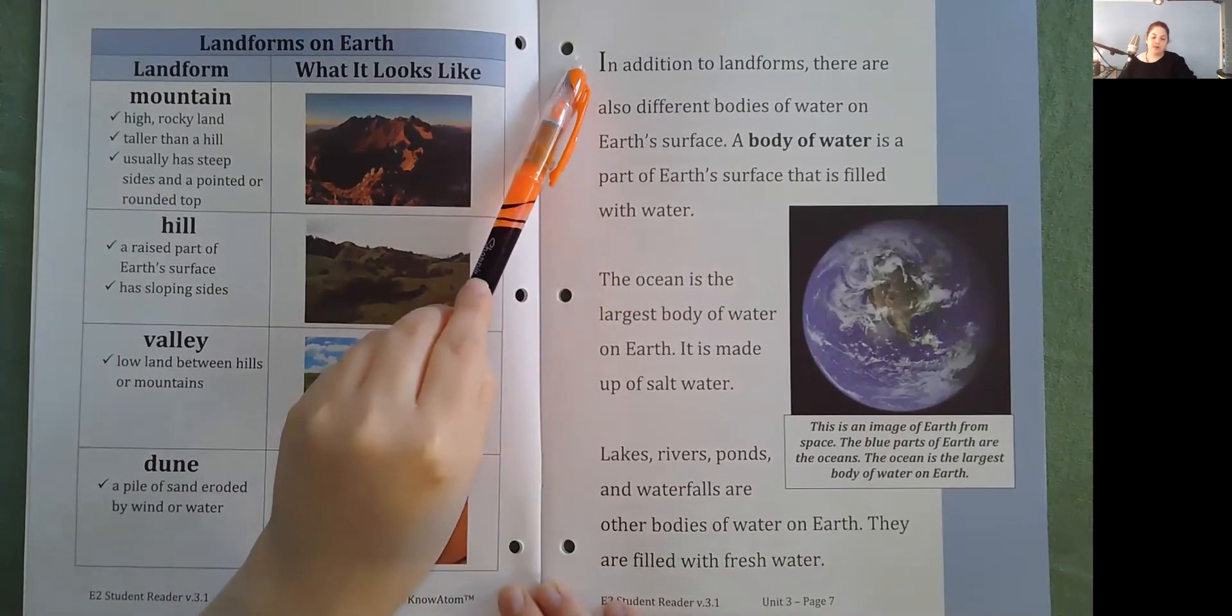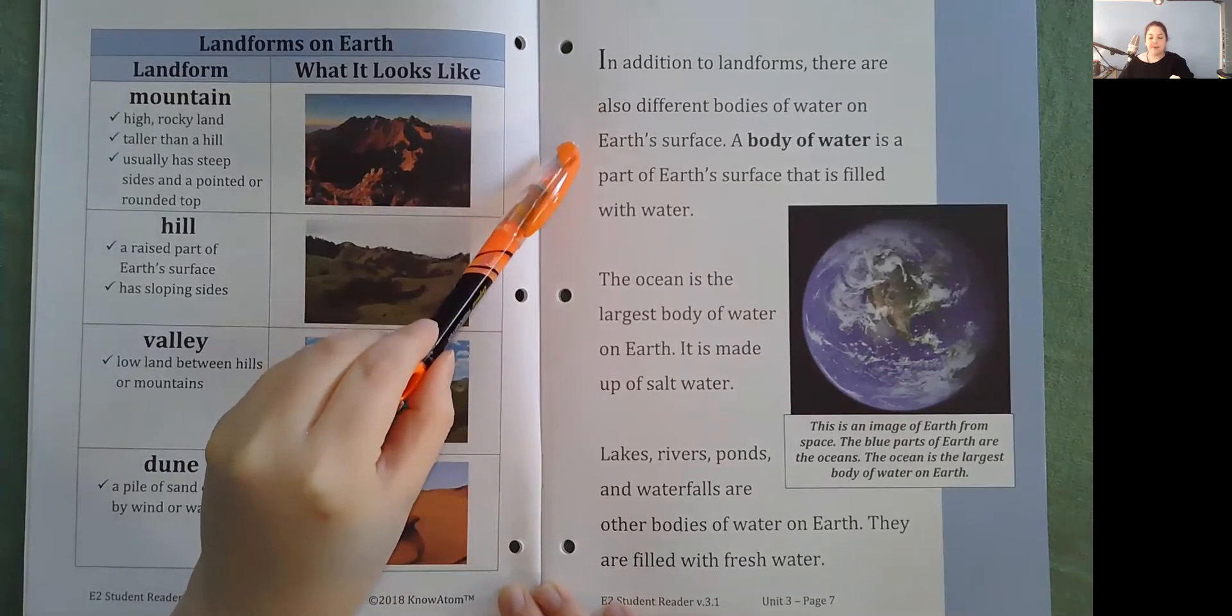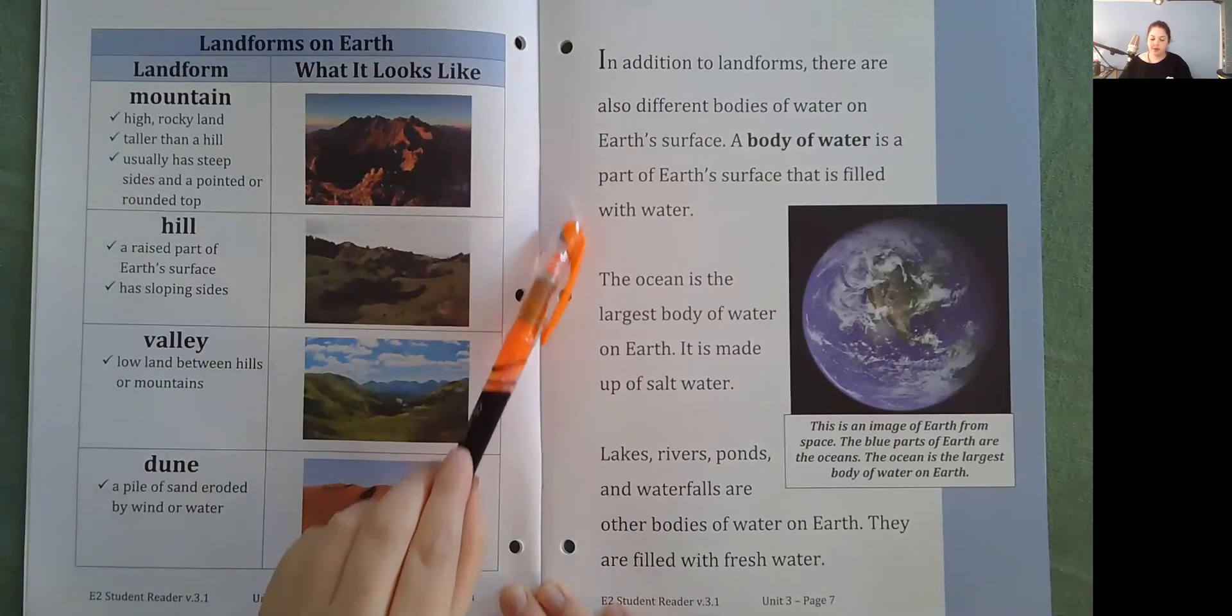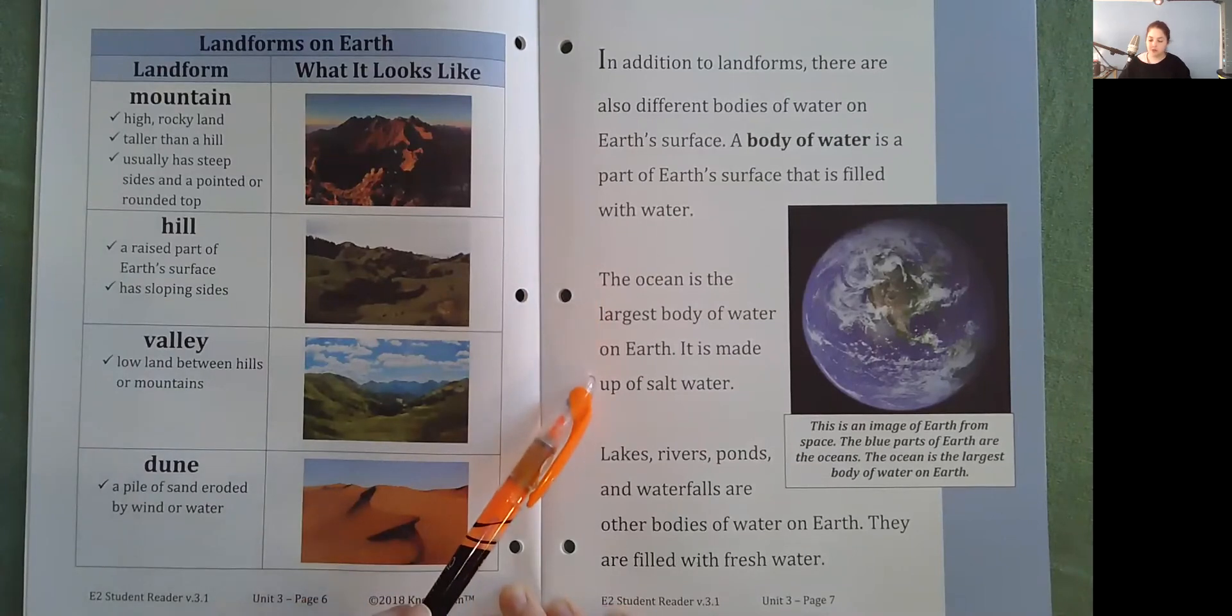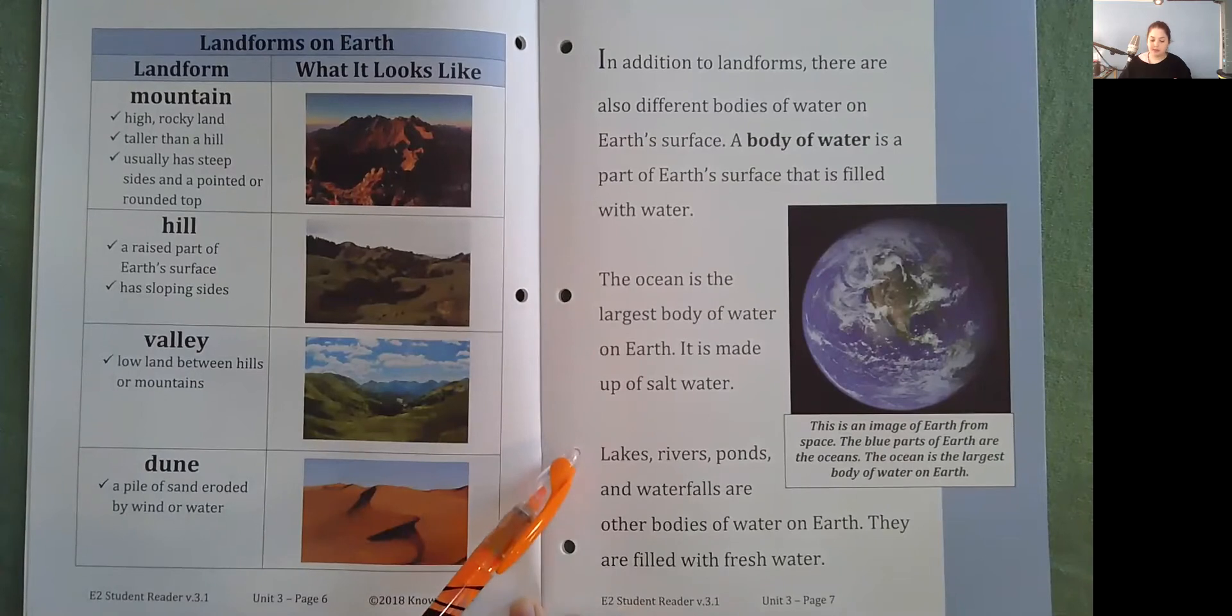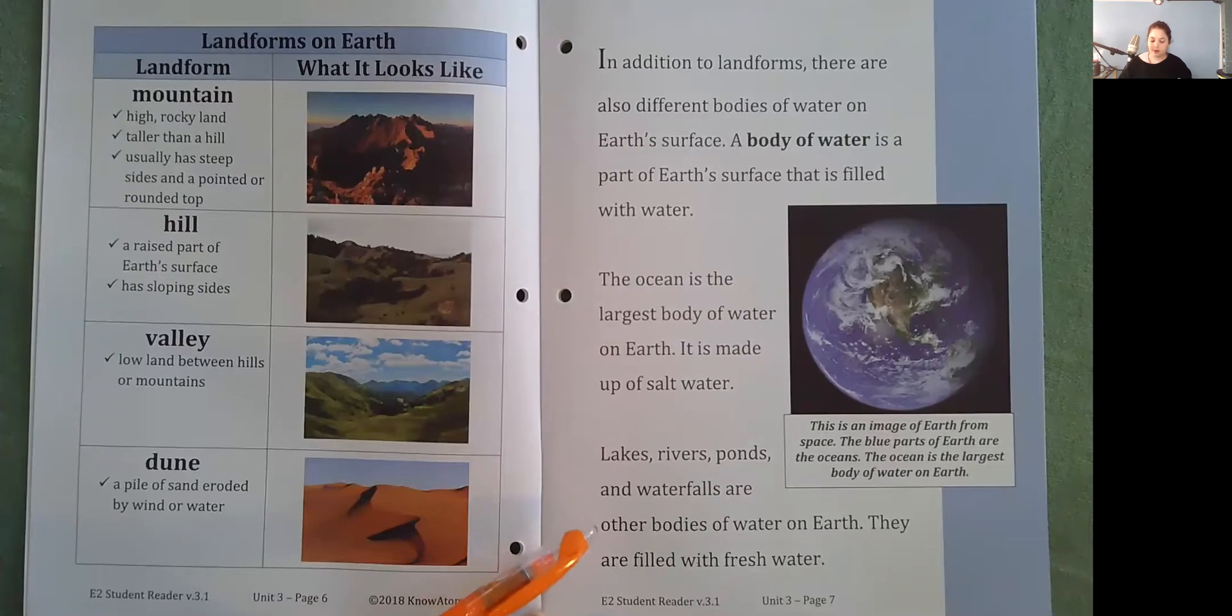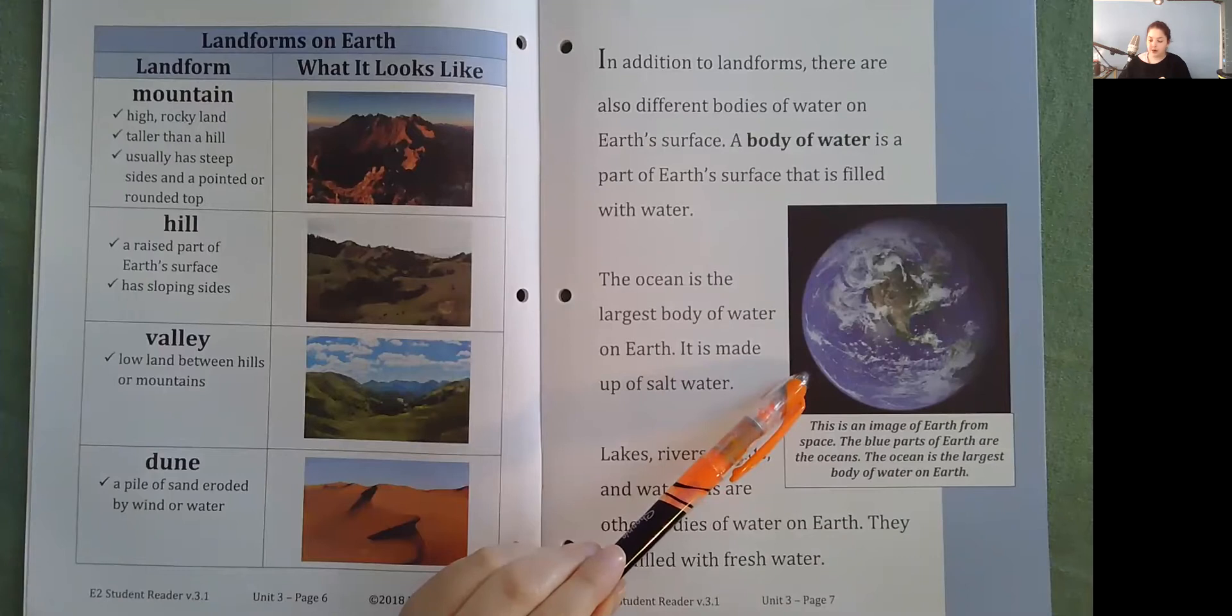Water. In addition to landforms, there are also different bodies of water on Earth's surface. A body of water is a part of Earth's surface that is filled with water. The ocean is the largest body of water on Earth. It is made up of salt water. Lakes, rivers, ponds, and waterfalls are other bodies of water on Earth. They are filled with fresh water. So here's an image of Earth from space. The blue parts of Earth are the oceans. The ocean is the largest body of water on Earth.